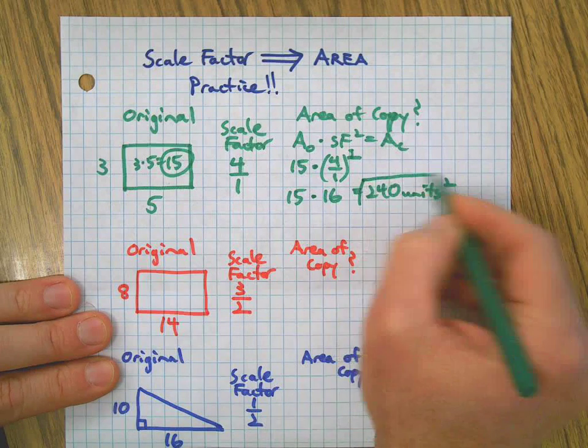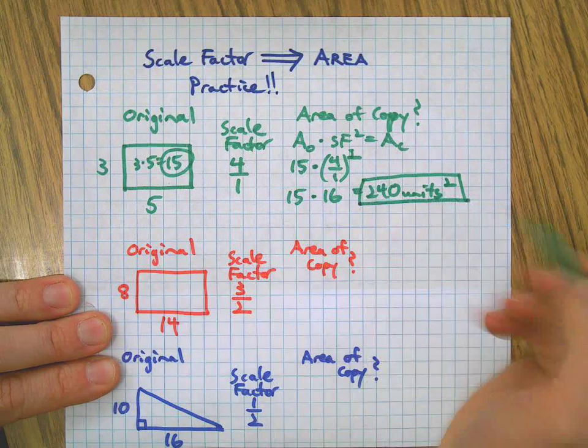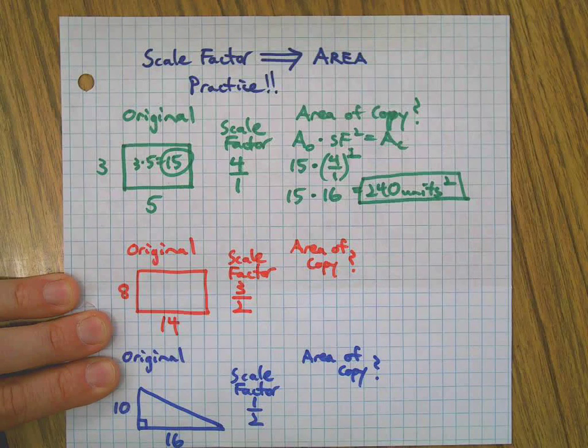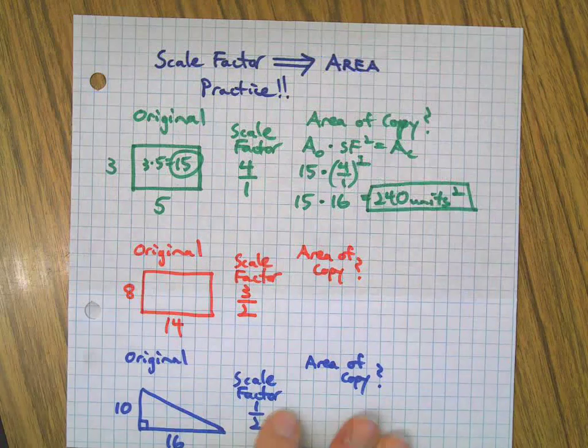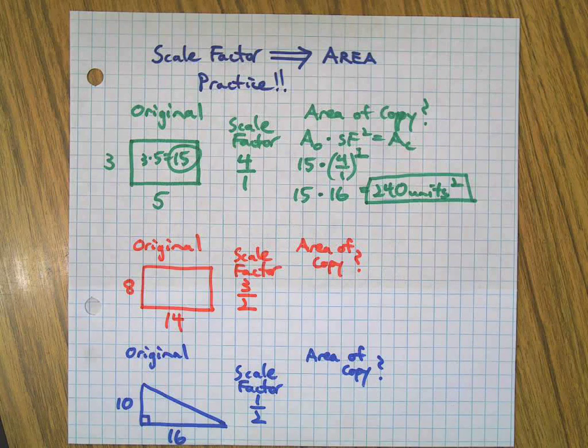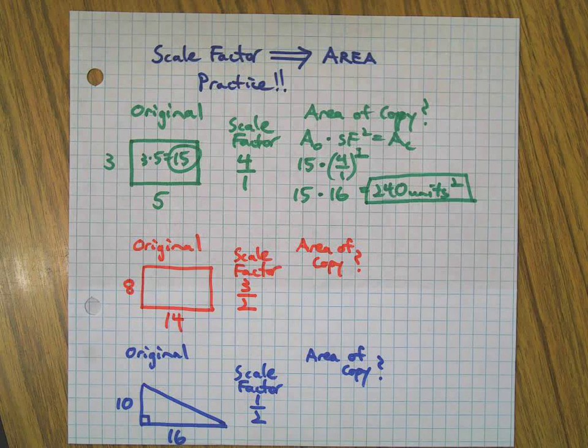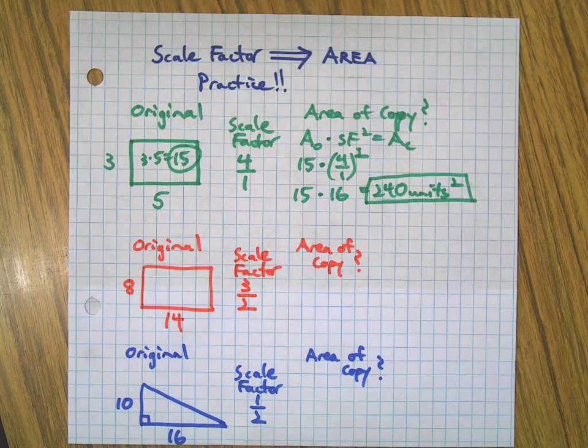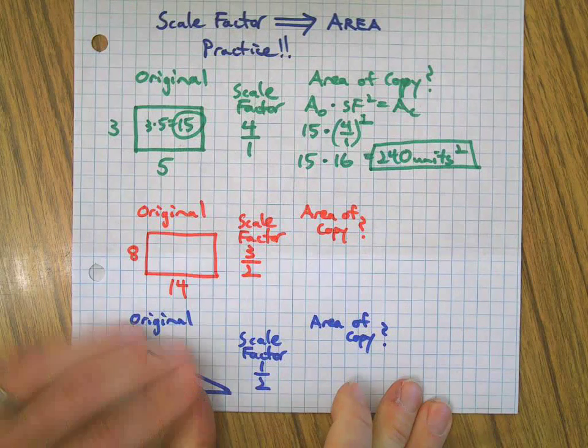And using my handy dandy calculator, we had 240 units squared, right? Square units. Is that what you got? I hope so, because that's the right answer. Maybe you forgot to square the scale factor. If you got it wrong, I don't know, you should always analyze your mistakes and try to figure out what happened so it doesn't happen again, because there's always another problem, another chance coming up.